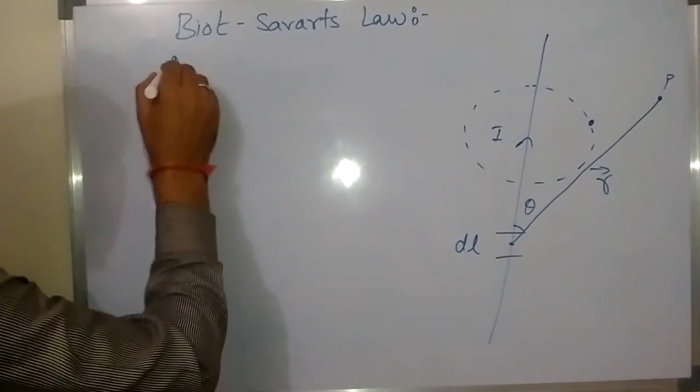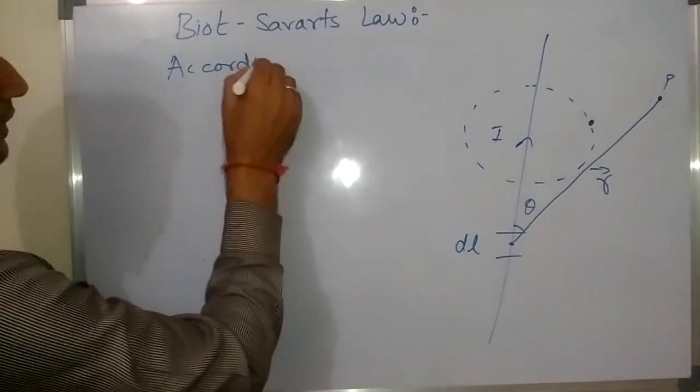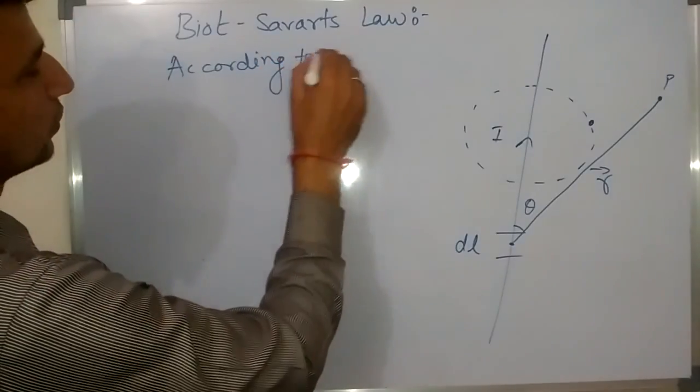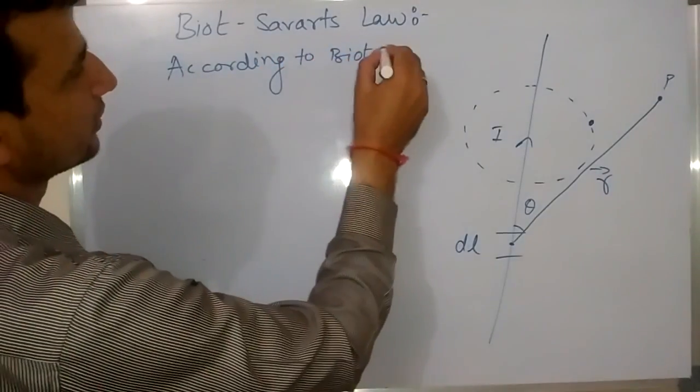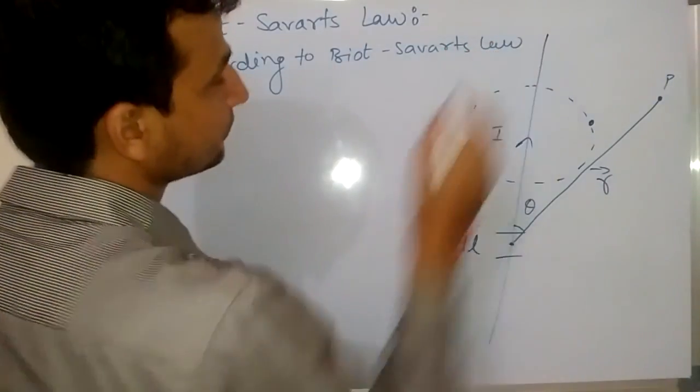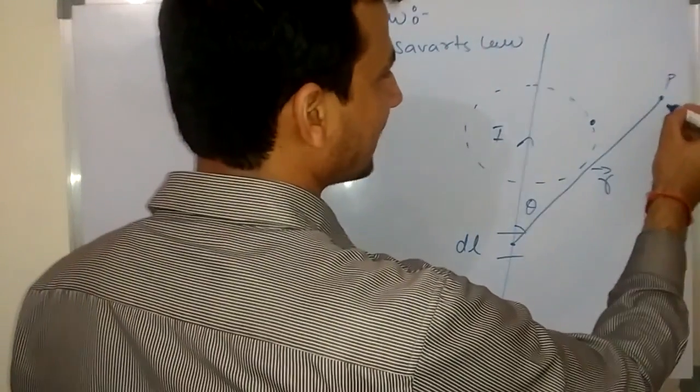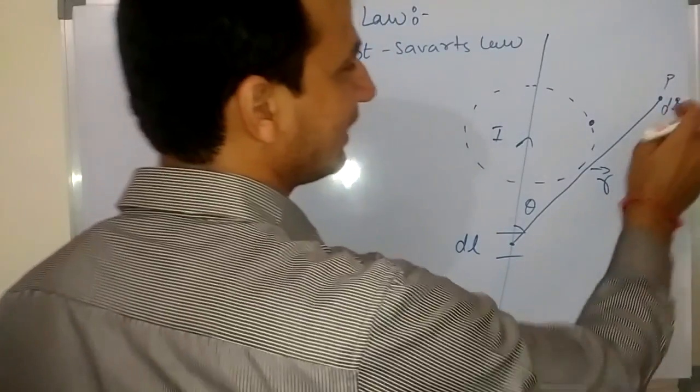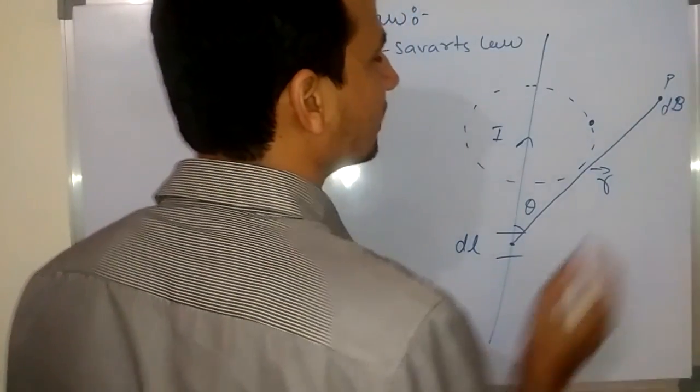Then according to Biot-Savart's law, the strength of magnetic field, we denote it by dB.